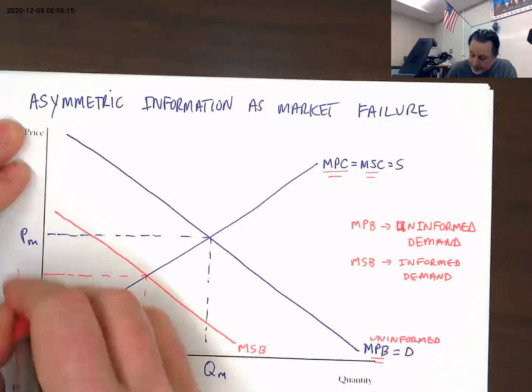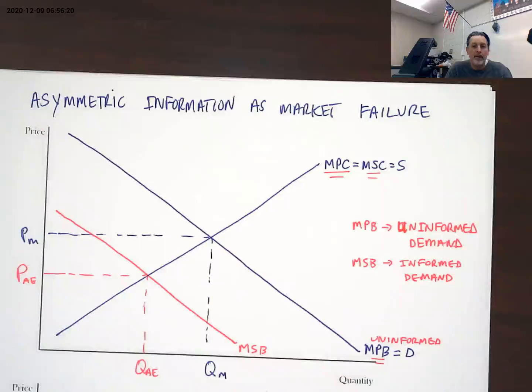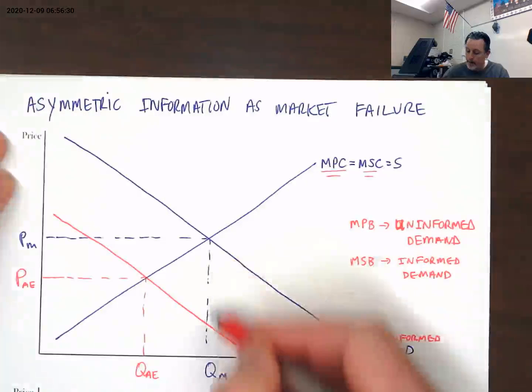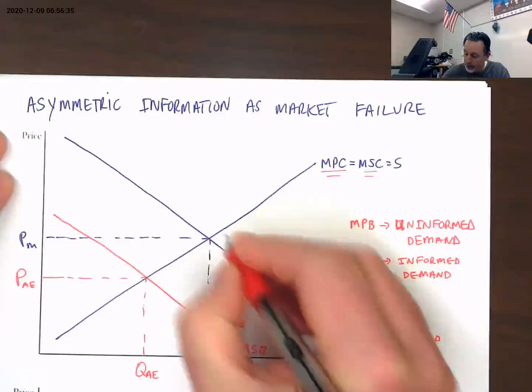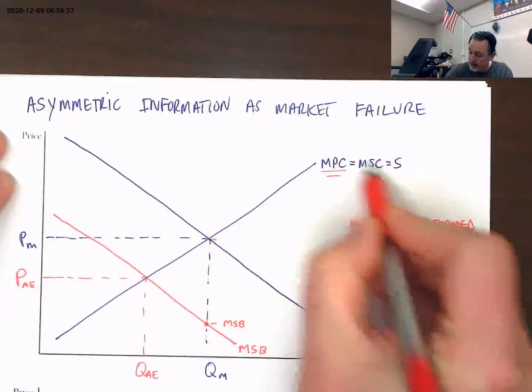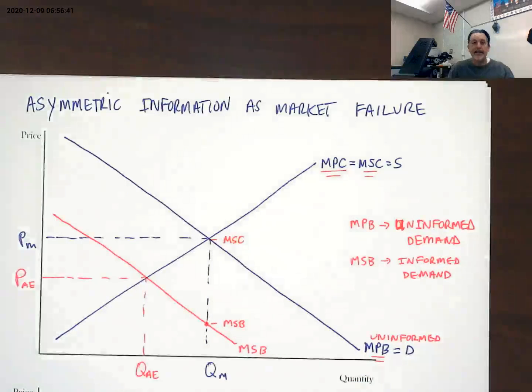One of the ways that we can show that this is a market failure is the price mechanism for this asymmetric information problem is setting our market quantity right here. At that market quantity, here is our marginal social benefit, here's our marginal social cost curve. We can see that the marginal social cost exceeds the marginal social benefit in that case.